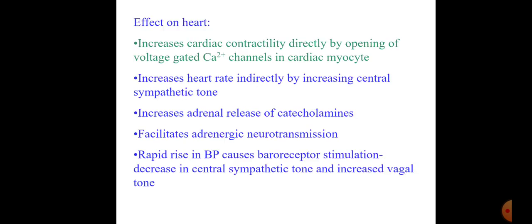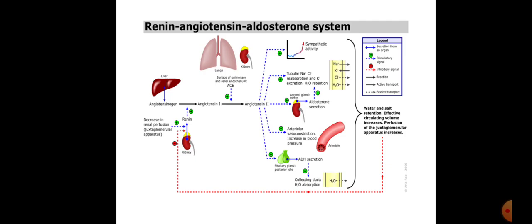Effects on the heart: angiotensin 2 increases cardiac contractility directly by opening voltage-related calcium channels in cardiac myocytes. It increases heart rate indirectly by increasing central sympathetic tone and by increasing norepinephrine effect through inhibition of norepinephrine reuptake. It increases adrenal release of catecholamines, especially adrenaline, and facilitates adrenergic neurotransmission by inhibiting reuptake and increasing vascular responsiveness. Rapid rise in blood pressure causes baroreceptor stimulation, decreasing central sympathetic tone and increasing vagal tone.